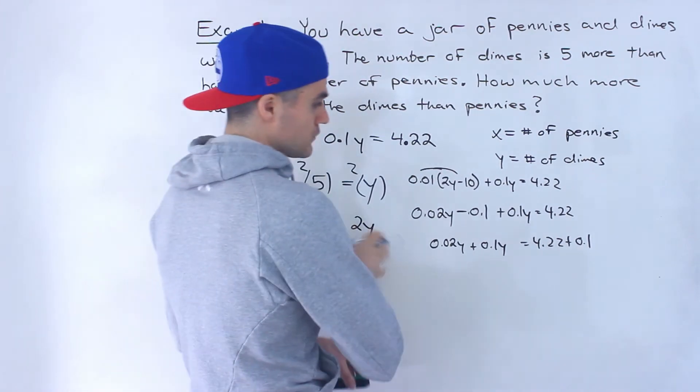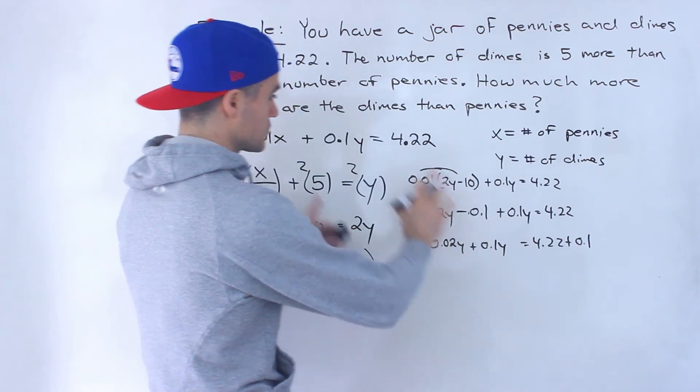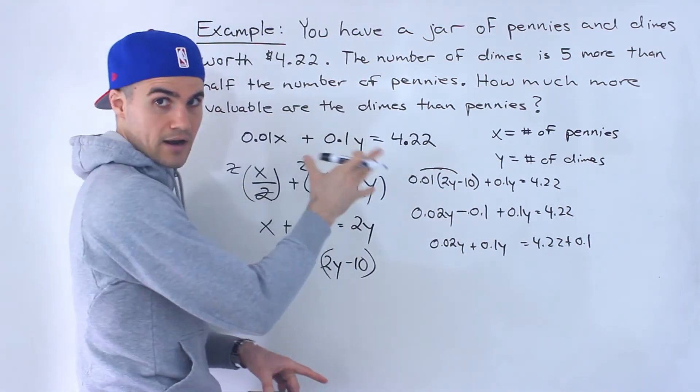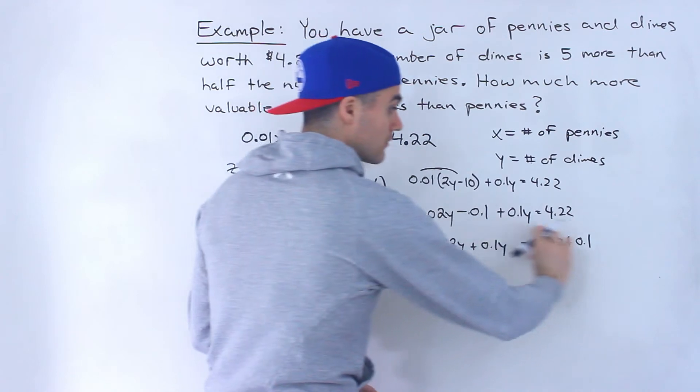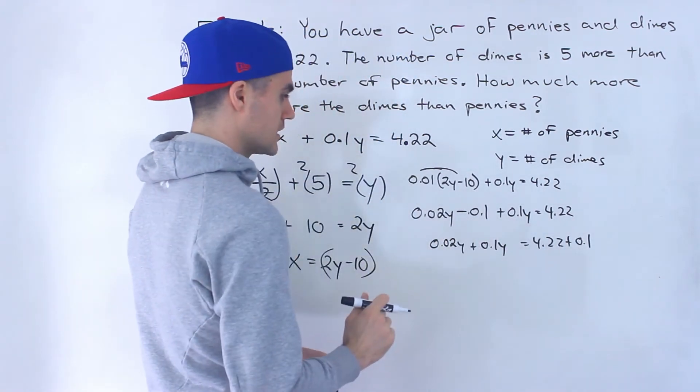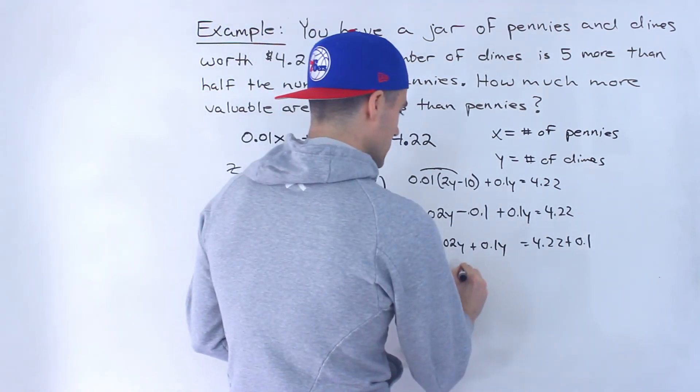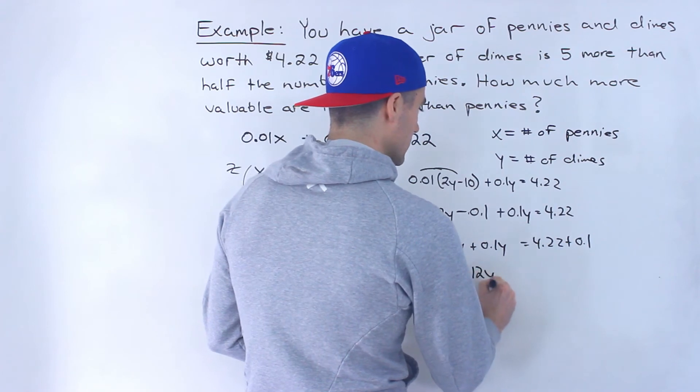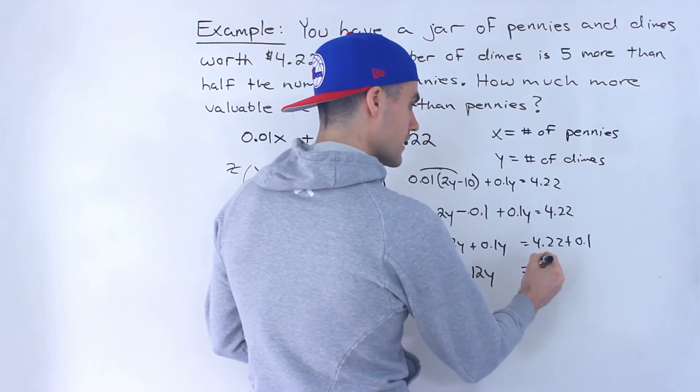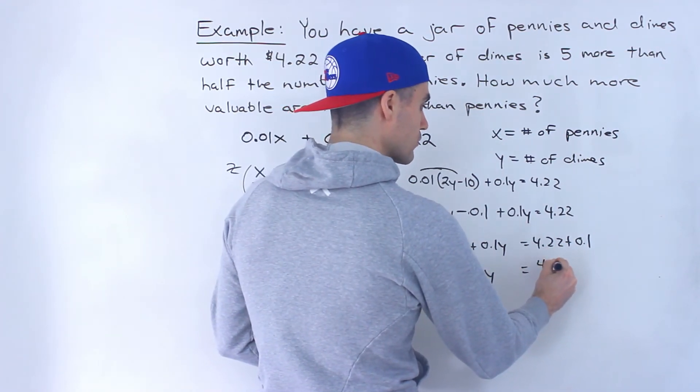Even at this point, if you don't want to work with these decimals, or even from the beginning, you could have used that other equation. You can multiply everything by 100. We're just going to keep it as is. So this would end up being 0.12y, and this would end up being 4.32.